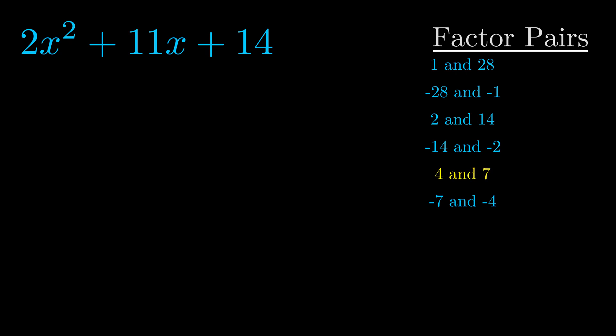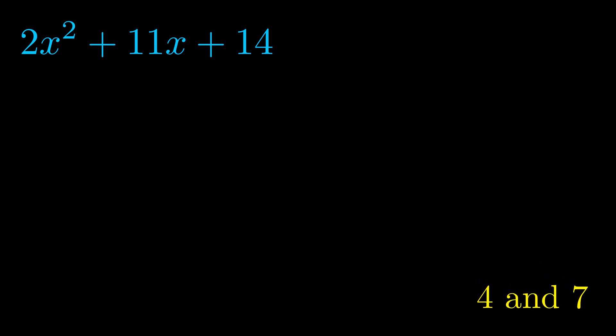And really this is the only factor pair that we need. Now once we have this factor pair, what we want to do is use it to split up the b value.